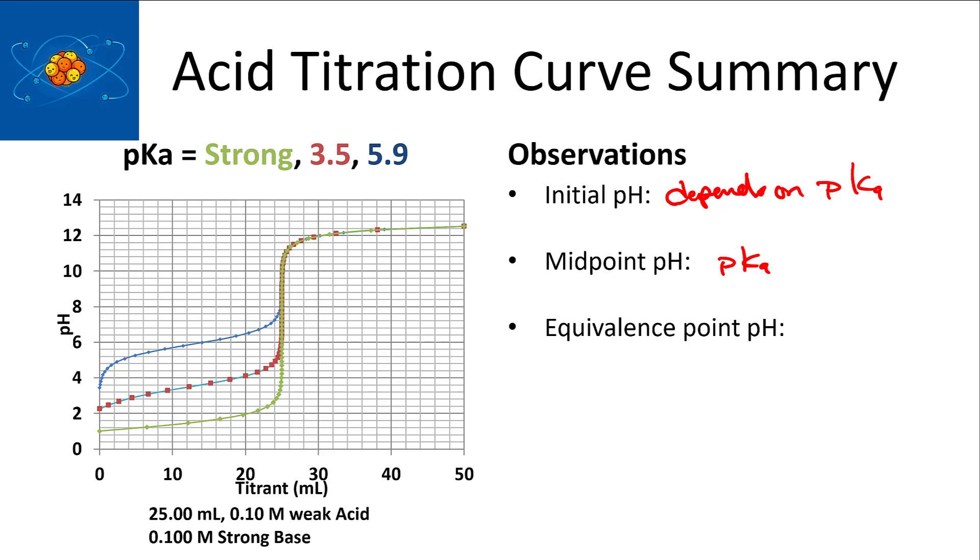The equivalence point pH - weaker acids are higher. That's also true for the midpoint pH. So if the pKa is high, the midpoint pH will be high and the equivalence point pH will be high.